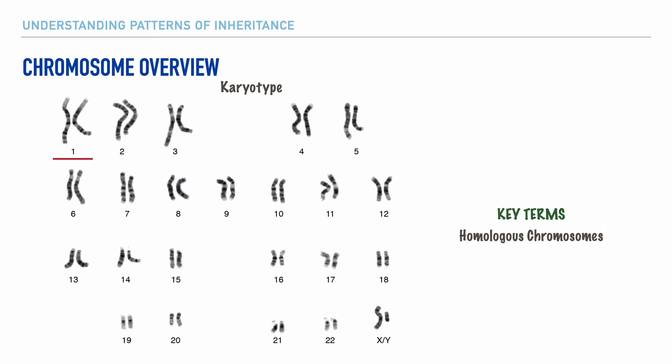As we continue along this karyotype, progressing through numbers 2, 3, 4, and so forth, we'll ultimately get to number 22. From numbers 1 through 22, we refer to these as autosomal chromosomes. Autosomal refers to the fact that all of these chromosomes are non-sex chromosomes — they don't represent the determining of our biological sex; instead, they determine other factors about us as individuals. So the last pair, number 23, are sex-related chromosomes, and they determine biological sex.